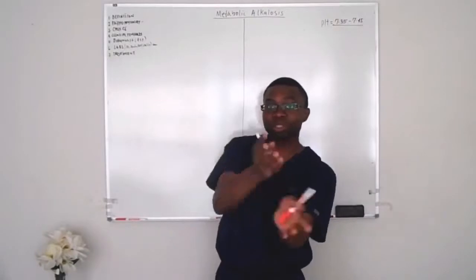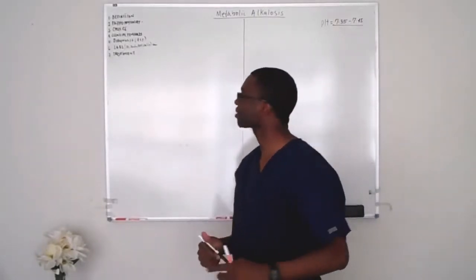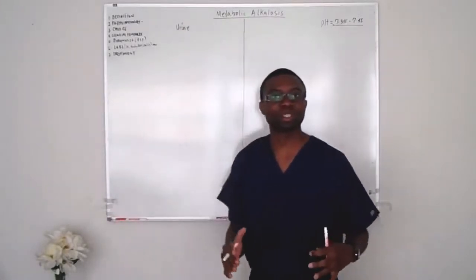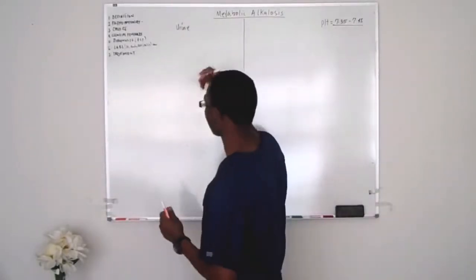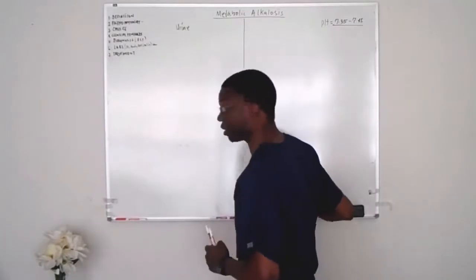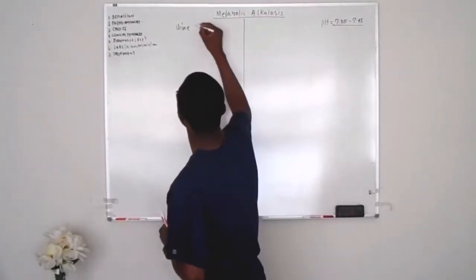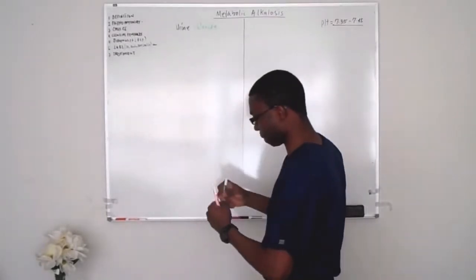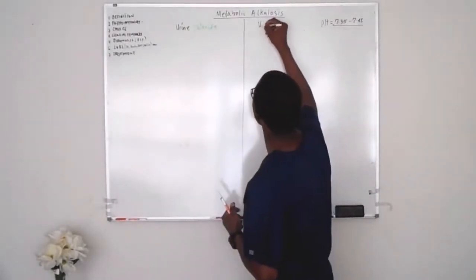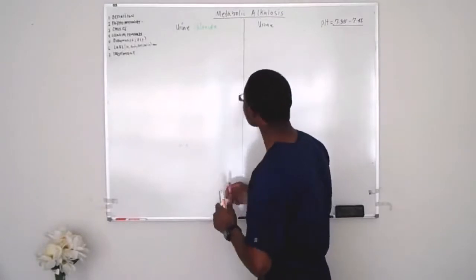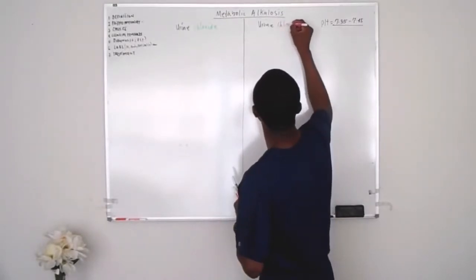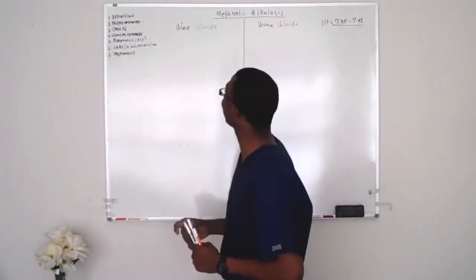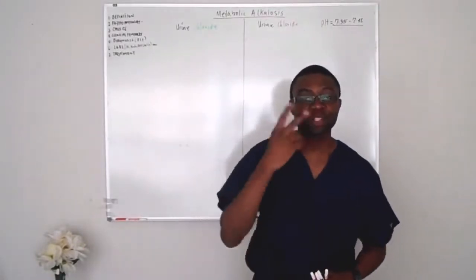So the key to metabolic alkalosis is urine chloride. Urine chloride. There are two types: saline-sensitive and saline-resistant. 'Saline' — from the word 'sal' — is just salt. So for saline chloride, we're going to ask: what will be the urine chloride?